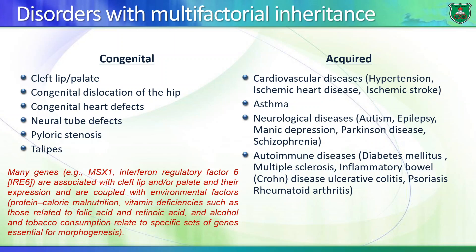There are a number of conditions or phenotypes associated with multifactorial inheritance, involving both genes and the environment. These include congenital disorders such as cleft lip, cleft palate, and congenital dislocation of the hip. There are also acquired conditions — those the person develops later in life — including cardiovascular diseases, neurological diseases, autoimmune diseases, and type 2 diabetes.